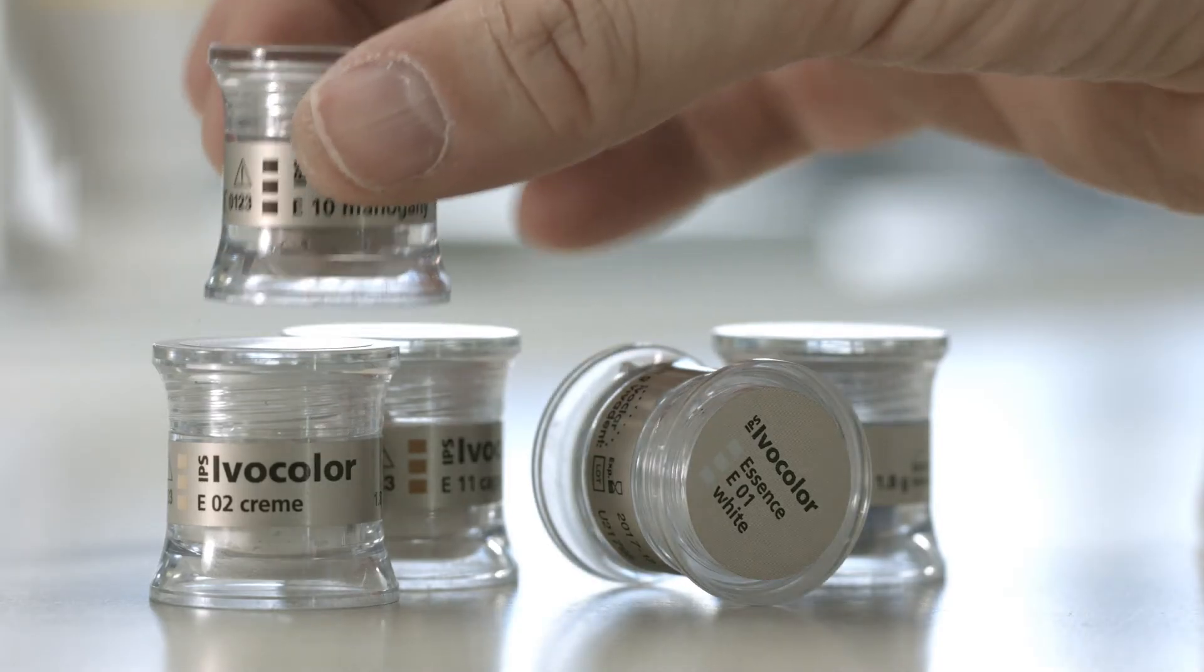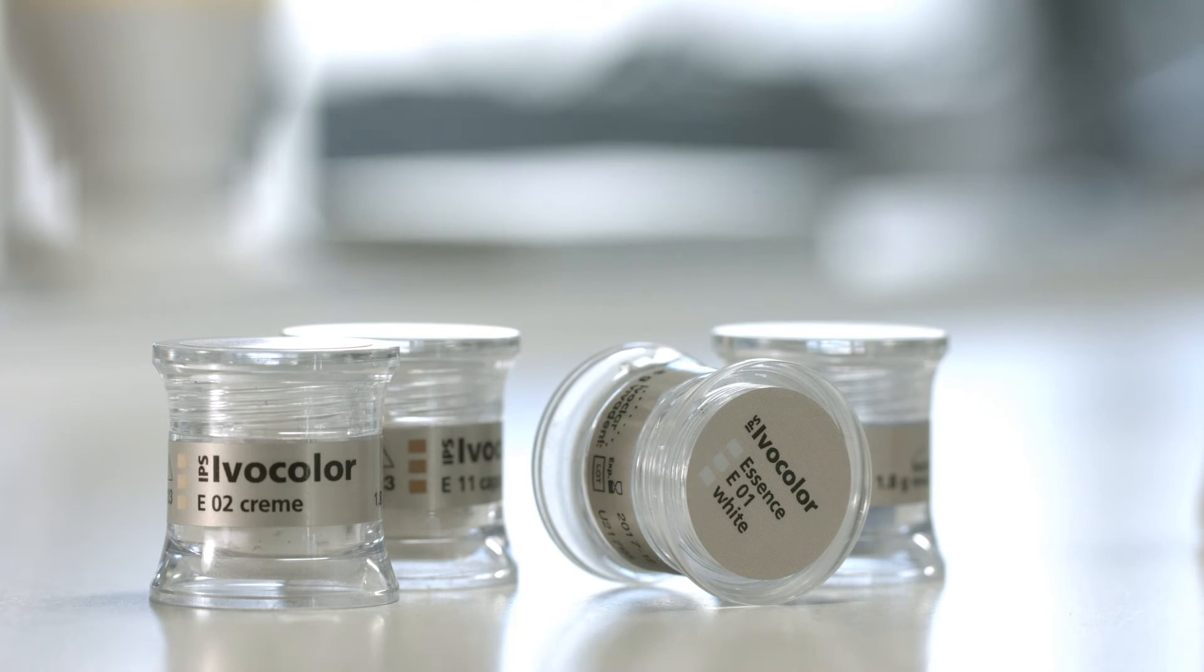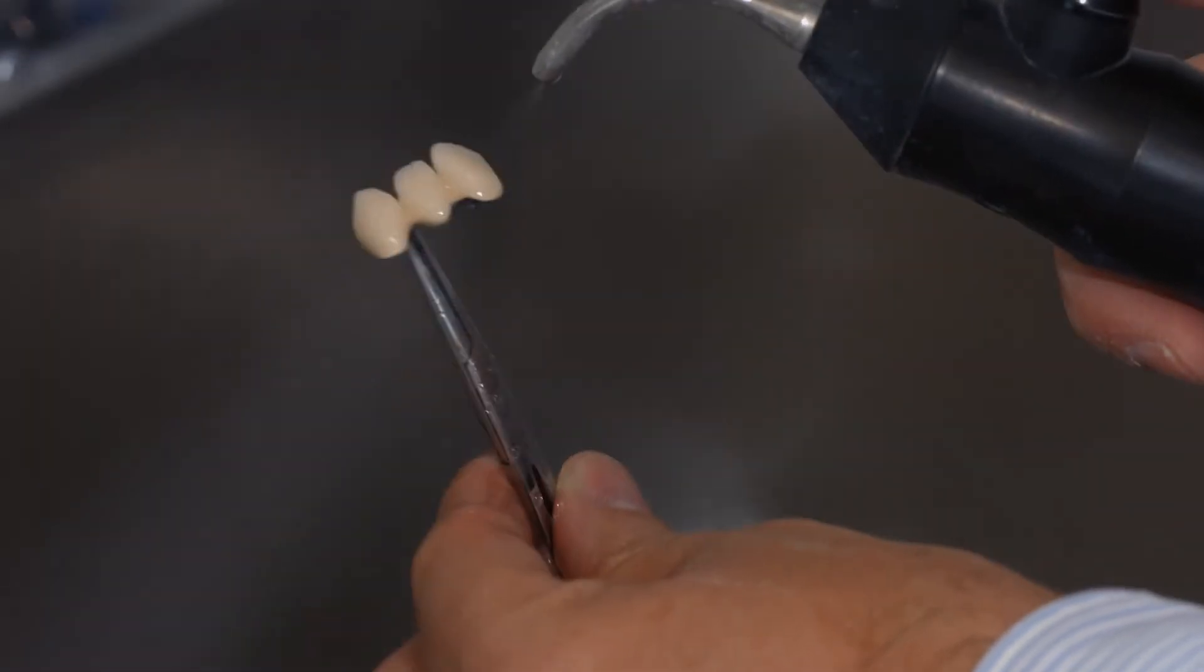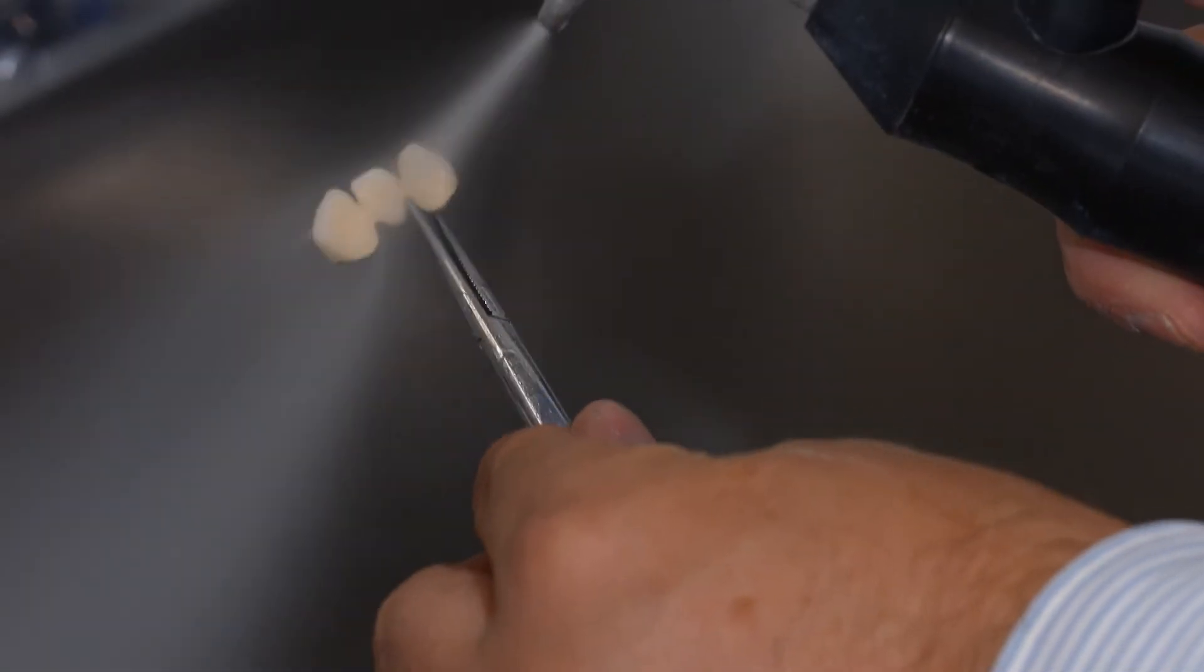Individualized characteristics can be applied with IPS Ivocolor Essence powders. In preparation for this process, thoroughly clean the restoration with the steam jet and dry it with oil-free air.